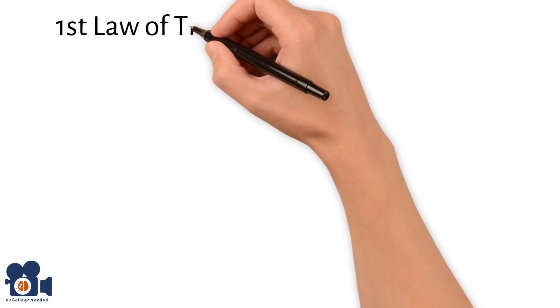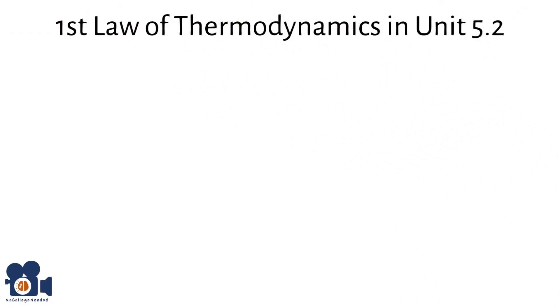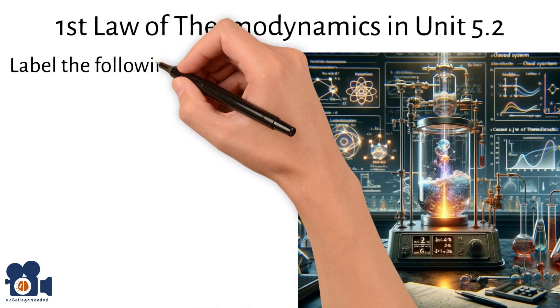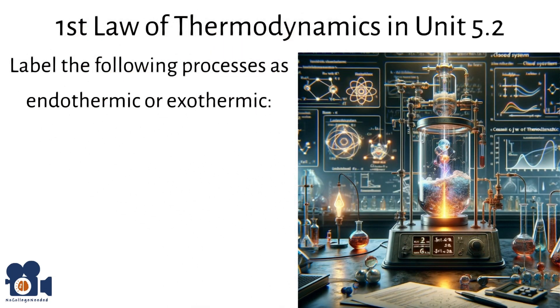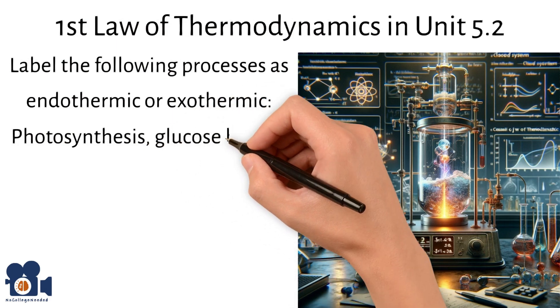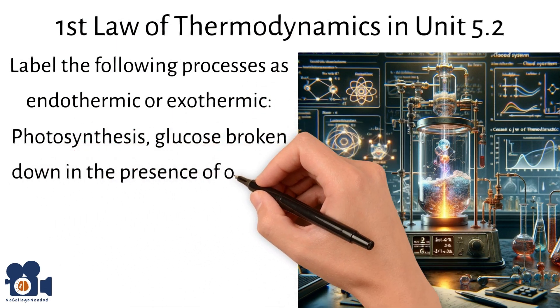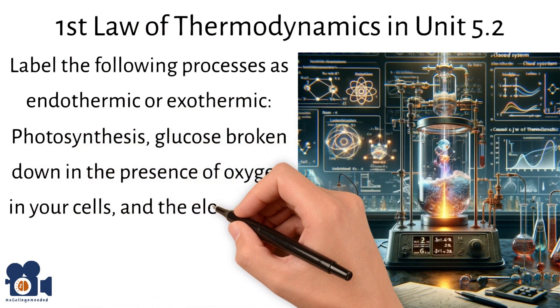With the first law of thermodynamics in unit 5.2, label the following processes as either endothermic or exothermic: photosynthesis, glucose being broken down in the presence of oxygen in your cells, and the electrolysis of water.